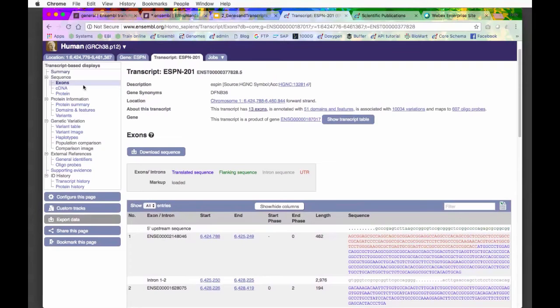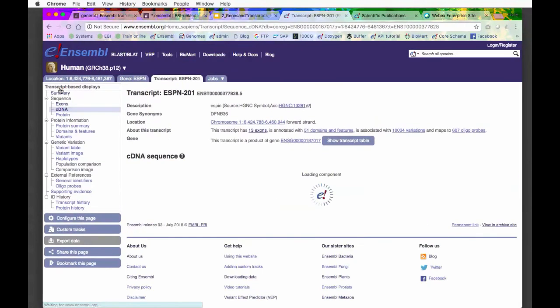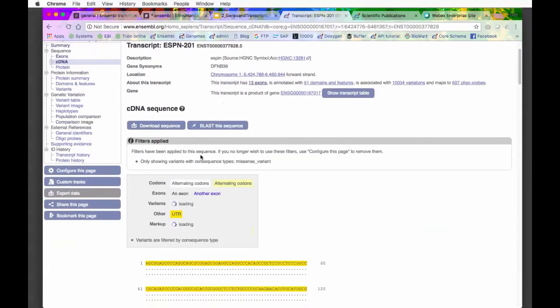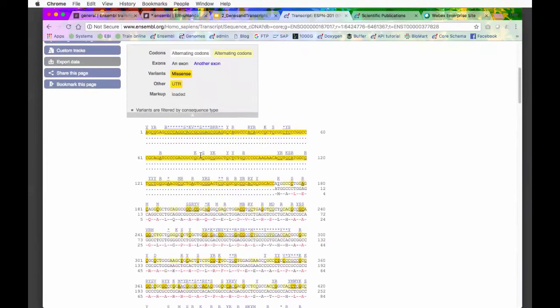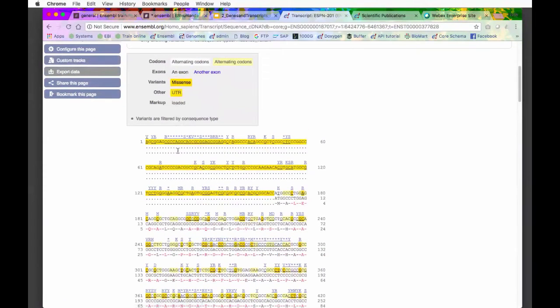The one that I actually think is best for looking at variants is the cDNA page. The reason I like the cDNA page for variants is because it shows us the protein sequence as well as the cDNA. We've now got three lines of sequence. The top line is our cDNA. The second line is the coding sequence. The third line is the amino acid sequence.